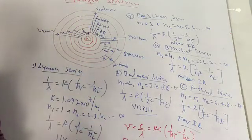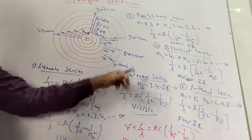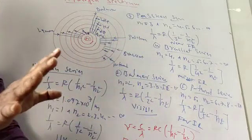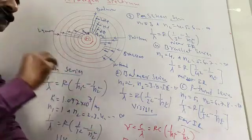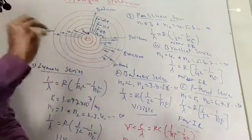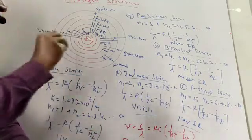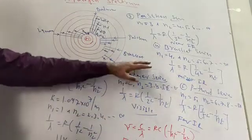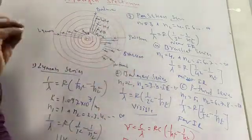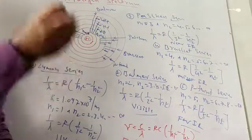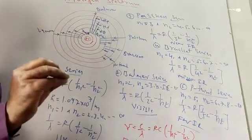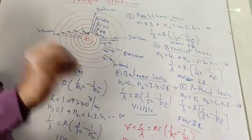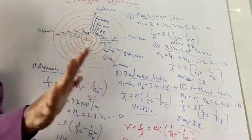A number of series are obtained. These series were observed by Lyman, Balmer, Paschen, Brackett, Pfund, and others. These different series were observed by these different scientists, and that is why the series of the spectrum is called the hydrogen spectrum. This hydrogen spectrum consists of different spectral lines against the dark background.